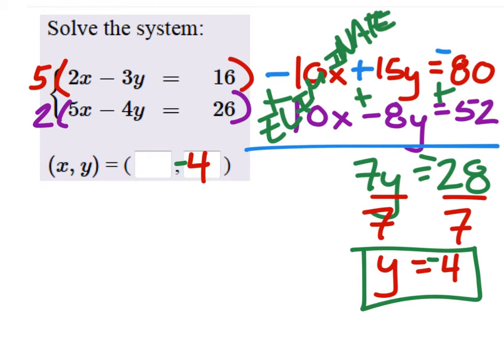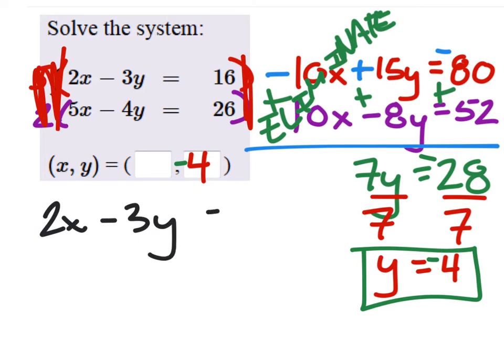So let's go back to the two original equations. Which equation do you guys want to use to solve for X? Top one. All right. So let's rewrite it. We got 2X minus 3Y equals 16. But we're going to replace Y with the value that we have. And hopefully you remember the negative, negative 4.